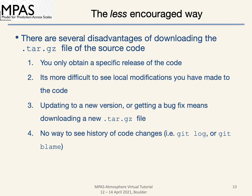Downloading the source code as a tar or zip file is certainly one way to obtain the code, but it comes with a number of disadvantages. Each download only contains one version of the code, which means you have to download another tar file to use another release. It also makes it difficult to see if you have made any changes or edits to a source file. You may think you have a good memory, but you'll probably forget about the file you edited a few weeks ago, not realizing that it was why your simulation is not running as expected.